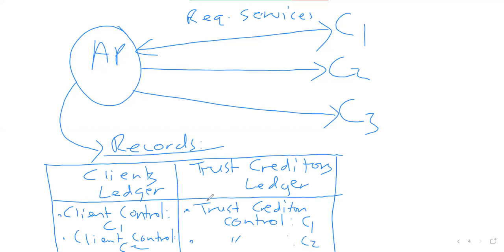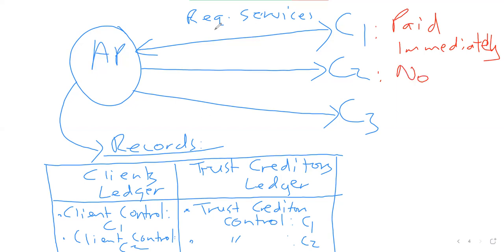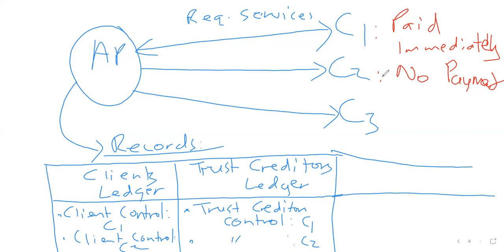The purpose of a trust creditor account: sometimes a client requests a service and they have money available so they pay immediately. Let's say client one paid immediately — they deposited money into your trust bank account. Client two made no payment. When client one deposits into your trust bank, that money goes into the trust bank — not the business bank account.